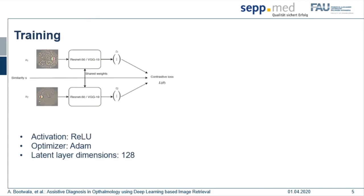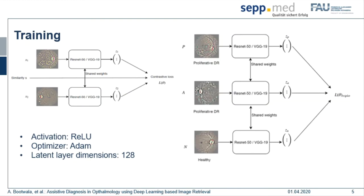Depending on the objective function, we use multiple images simultaneously across a Siamese network with shared weights. We typically use VGG-19 and ResNet-50 architectures, though in principle any feature extractor can be used. We replace the final layers of these networks with a layer of 128 nodes, representing the number of dimensions in our latent space. We use the ReLU activation function for all layers and the Adam optimizer for gradient updates.